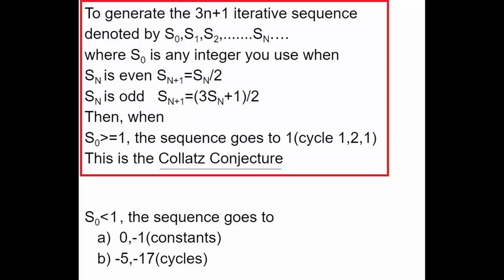Also, when S0 is less than 1, the sequence goes to 0 and minus 1 — both constants — and minus 5 and minus 17 are cycles.